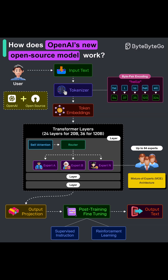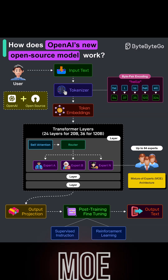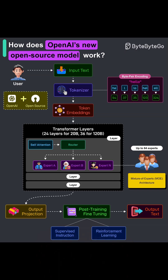Because it operates at the byte level, it naturally supports any input — text, code, emojis, even mixed languages. Each token ID is mapped to a vector using a learned embedding table. Think of embeddings as coordinates that place similar concepts near each other in a high-dimensional space. This vectorized form is the language the model actually thinks in.